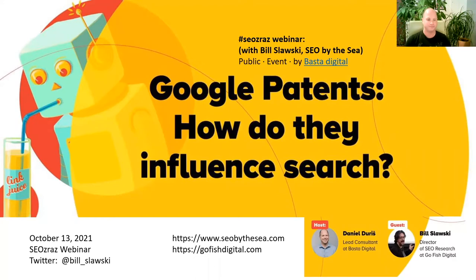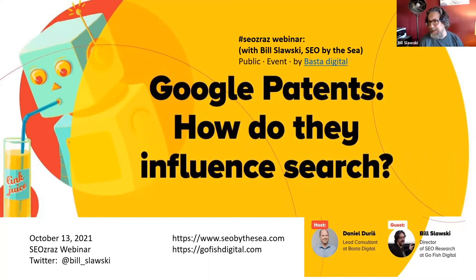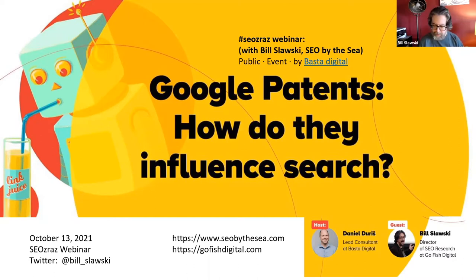Thank you. I'm talking today about Google patents. I spend a lot of time with patents — usually a few hours a week. Patents come out twice a week in the US at the USPTO website, when they grant patents and when they publish new patent applications. I also look at the WIPO — World Intellectual Property Organization — website once a week to see anything published there that hasn't been published in the United States.